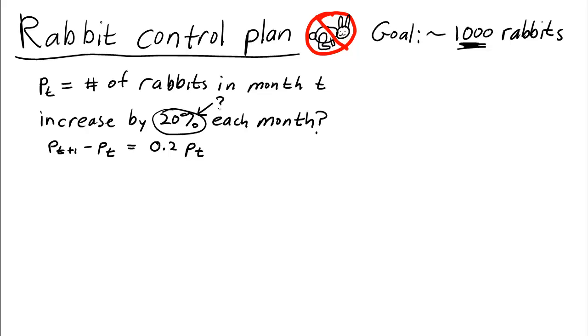But, you know, I'm not so sure. Do we really believe this? 20%? They might be wrong. Rather than assuming that 20% is right, let's just call this a parameter. Let's call this r.